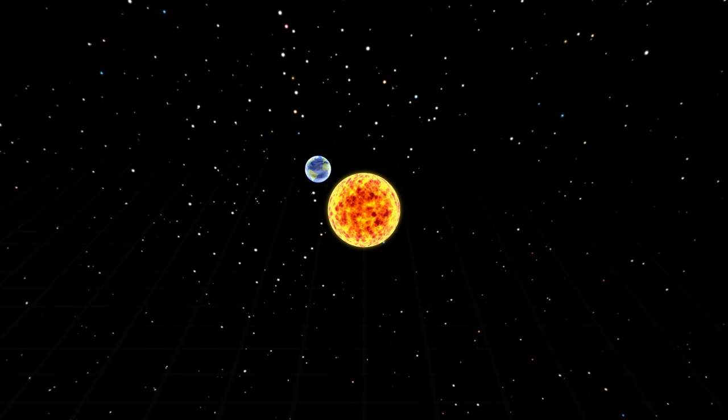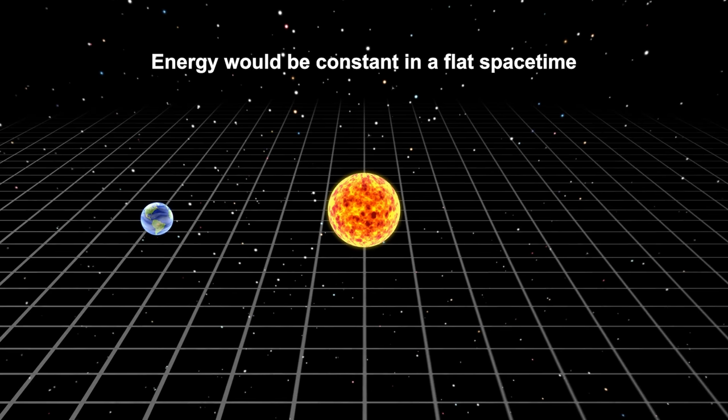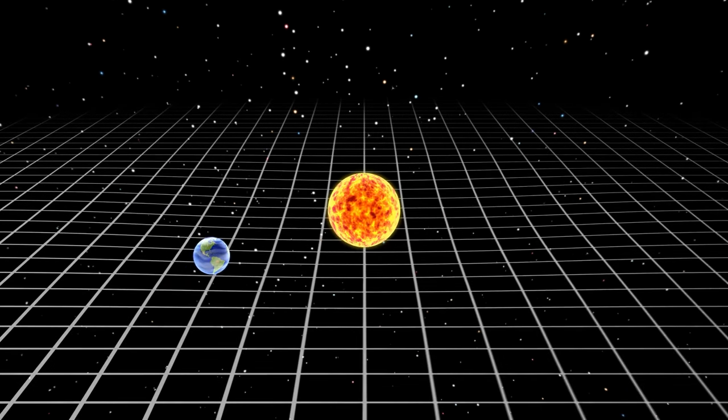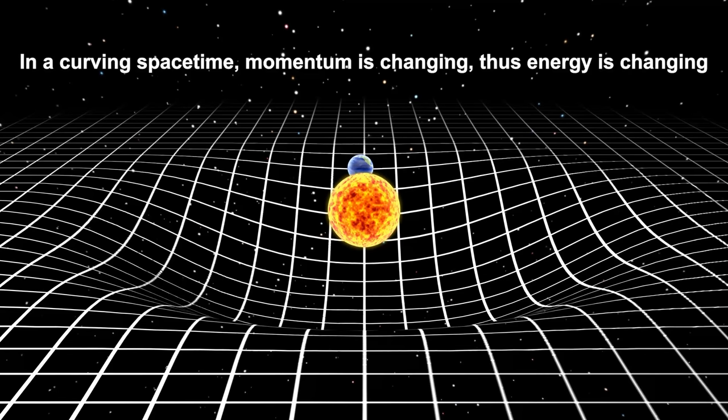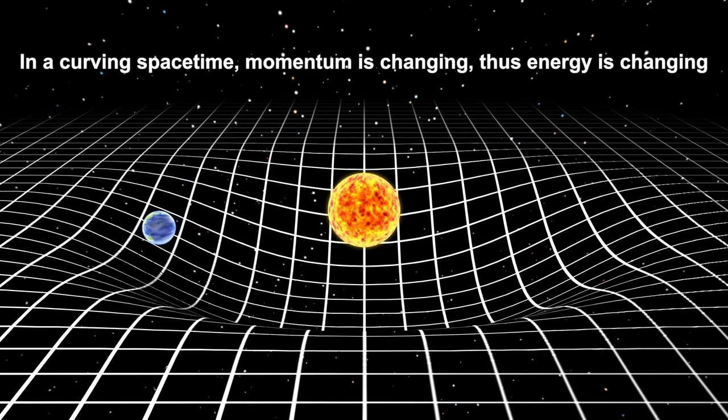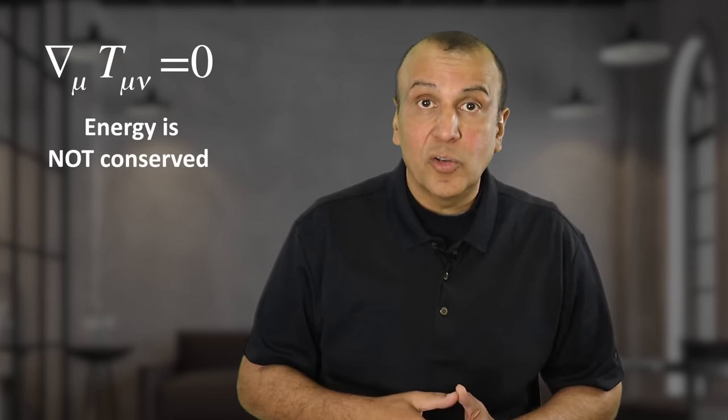What general relativity tells us is that if spacetime were standing still, that is if it were flat and not changing, then energy would be constant. But if spacetime is curving and changing, then the momentum is changing, and thus the energy is changing as well. So astonishingly, it tells us that at large scales, energy is really not conserved in the universe.